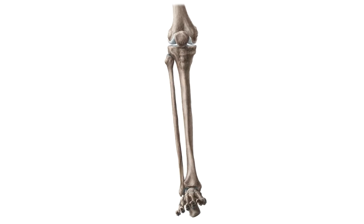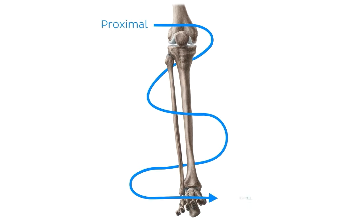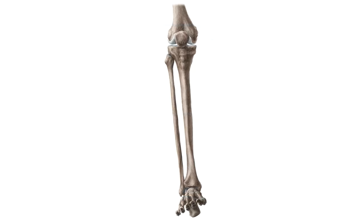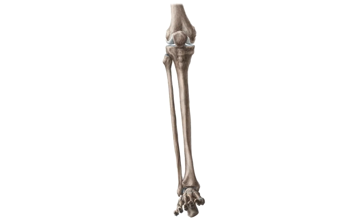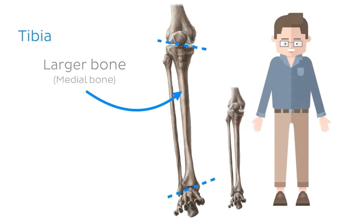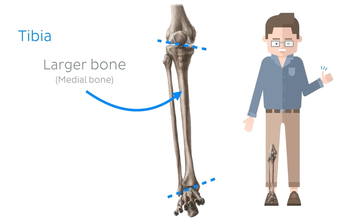We'll work from proximal to distal, starting with the bones in the leg. The leg, which is the part of the lower limb between the knee joint and the ankle joint, has two bones. Here we are looking at the skeleton of the lower limb from an anterior view. The larger bone, commonly referred to as the shin bone, is the tibia.